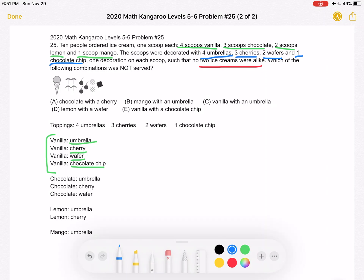So now going back to our toppings, we used an umbrella, so there's only three left. We used a cherry, so there's only two left. We used a wafer, so there's one left. And we used a chocolate chip, so there are no chocolate chips left.